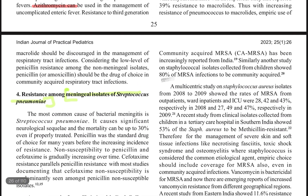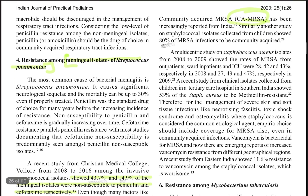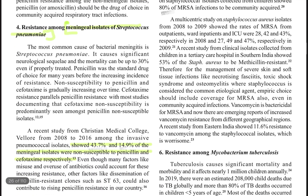Next, Staphylococcus aureus — more and more community-acquired MRSA are being seen. Your drug of choice depends on where the infection is. Skin and soft tissue infection is one of the most common community-acquired MRSA presentations. If there is a bloodstream infection associated with it, vancomycin will be the drug of choice.